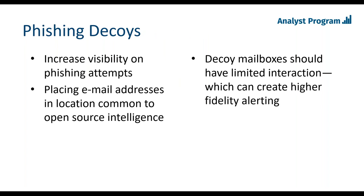For phishing decoys, if we set up a fake mailbox in sensitive distribution lists, we could see the types of phishing attacks hitting lists that receive from external email addresses. We could also create decoy social media profiles or put email addresses with our domain out there. If an attacker is doing open source intelligence gathering information about our environment, a fake mailbox could provide visibility into that activity.